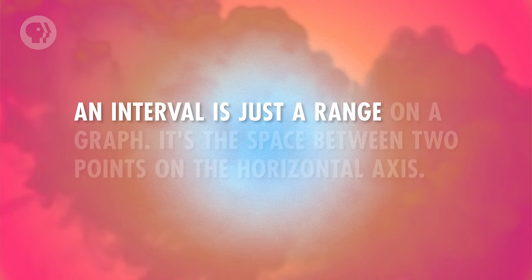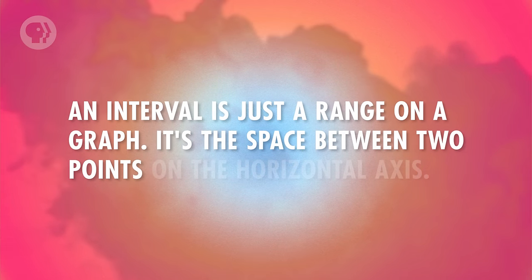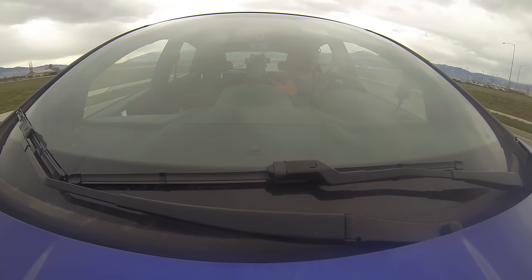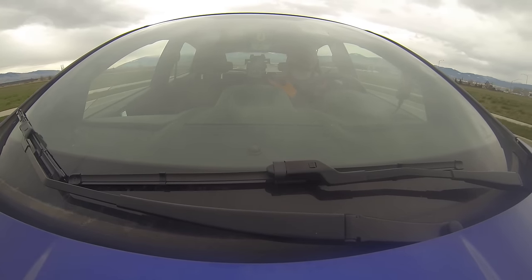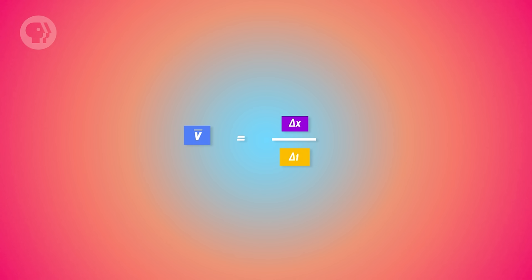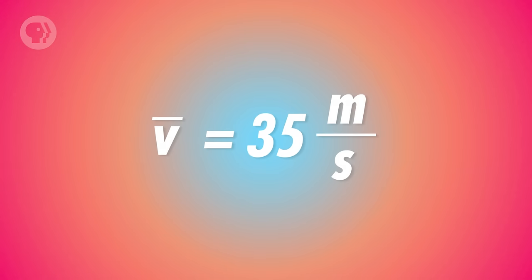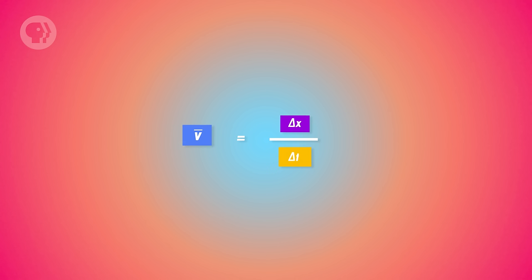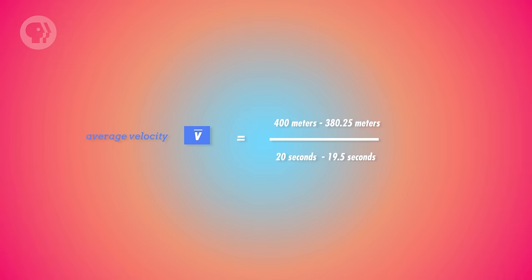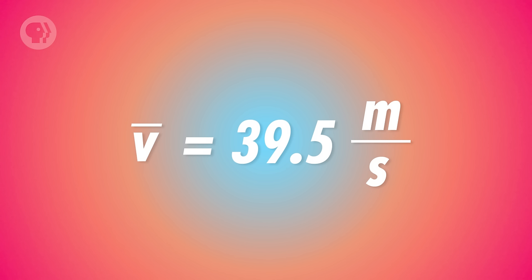Limits are useful because they can help predict what happens as you make intervals smaller. An interval is just a range on a graph – the space between two points on the horizontal axis. So the first thing we can try is calculating your average velocity over the interval from 15 to 20 seconds. We use the equation for average velocity: change in position divided by change in time. That turns out to be 35 meters per second. But it's just an average – it's not exactly how fast you were going after 20 seconds of acceleration when you passed the detector. Because of limits, we know you could get closer to the right number by calculating your average over smaller and smaller intervals. Then you'd see the number seems to be getting closer and closer to 40 meters per second, which means you're going to need to slow way down if you don't want to get your second speeding ticket of the day.